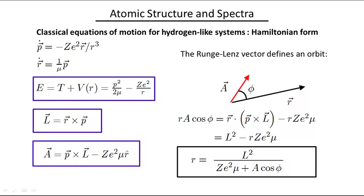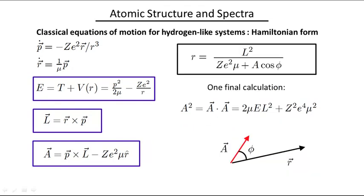Here is an equation that defines the orbit. It shows r as a rather simple function of the angle phi. Apart from specifying the origin of time, once you have the values of these constants of the motion, things pretty much fall into place.